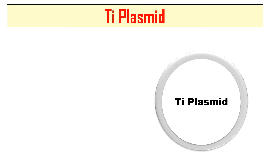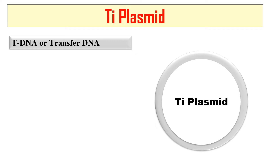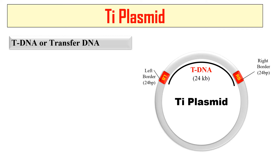Let us discuss the various elements or parts of this Ti Plasmid. The first element it contains is the Transfer DNA or T-DNA — this is the DNA which is transferred to the plants for causing the Crown Gall disease. There are two kinds of sequences: left border and right border. These are 24 base pair sequences, and the DNA between these left and right borders is called T-DNA, which is 24 KB in length. This is the DNA which is transferred to the plant cell.